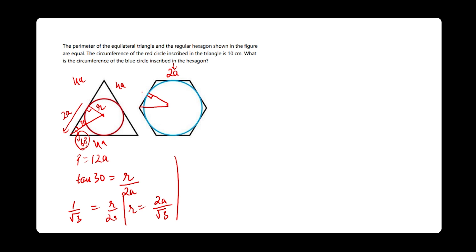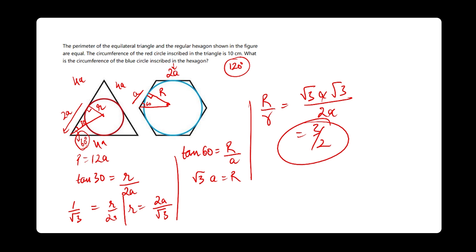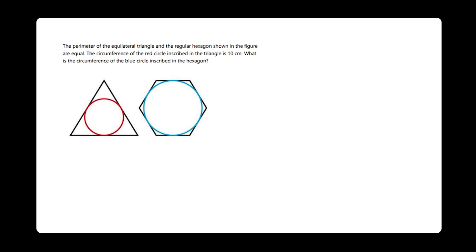So we can apply tan 30° where the perpendicular is r and the base is 2a, giving us 1/√3 = r / 2a, so r = 2a/√3. Similarly for the hexagon, we drop the height: the side is 2a so half would be only a, and this angle would be half of the complete angle. The angles of our hexagon are 120°, so this will be 60°. Applying tan 60°: capital R divided by a equals √3, so R = √3·a. Now the ratio R/r = √3·a ÷ (2a/√3) = 3/2. As the radius ratio is 3:2, the circumference of the bigger circle would be (3/2) of the smaller circle — that is (3/2) × 10 = 15 centimeters.